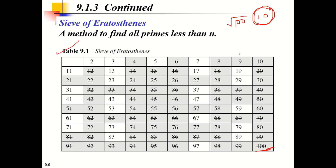After crossing out all multiples of 2, 3, 5, and 7, we are left with 25 prime numbers up to 100. This is one way to find all primes less than a given number, though it is not a very efficient method. We have another method that is extensively used in asymmetric key cryptography, which is much easier and takes less time.